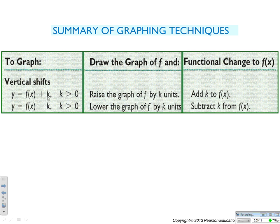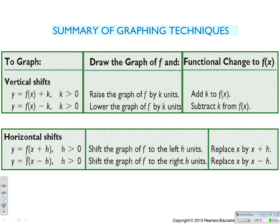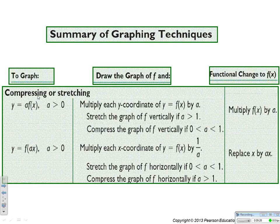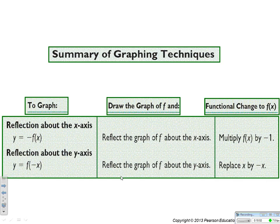To summarize: to shift up, add to the function; to shift down, subtract. To shift left, add to the inside of the function; to shift right, subtract. To compress vertically, use a multiplier between 0 and 1; to stretch vertically, use a multiplier greater than 1. Horizontally, replacing x with a constant times x stretches the graph if the constant is between 0 and 1, and compresses it if greater than 1. Reflection about the x-axis multiplies the function by negative 1; reflection about the y-axis replaces all x's with negative x.